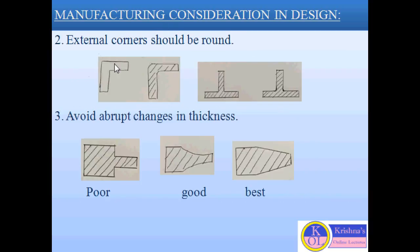Second consideration is that external corners should be round. As you can see in these two diagrams, the external corner is taken as round. If we take the external corner as round, it reduces the formation of brittle edges and also increases the endurance limit. Here we are taking a fillet radius, so the fillet radius also reduces the stress concentration. The metal in the corner cools faster than the metal adjacent to the corner, and because of this, a brittle chilled edge forms due to iron carbide.